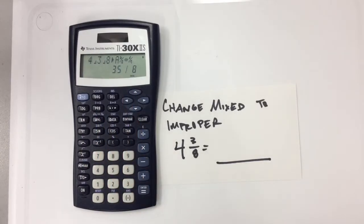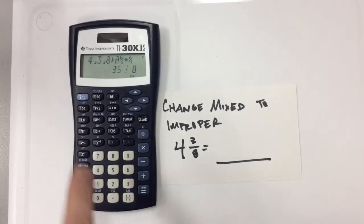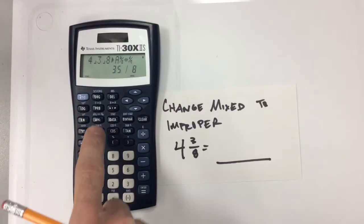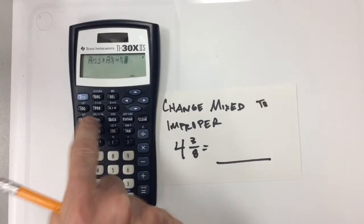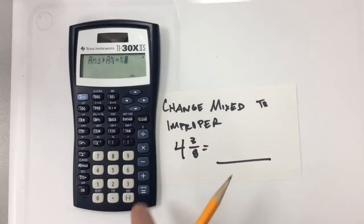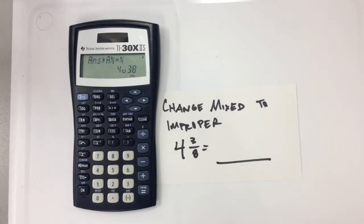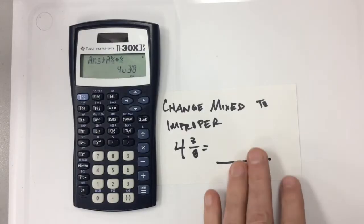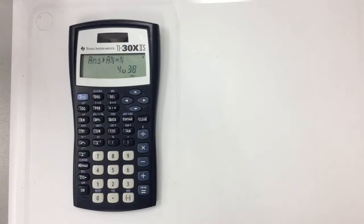Let's say I had 35 eighths in there and I wanted to know what that was as a mixed number. I'd do the same thing — hit shift, then hit that button again, it's asking me what I want to do, and there it changed it back to a mixed number. So that function on the calculator will change mixed numbers to improper, or improper to mixed, which is nice and something you don't have to worry about.